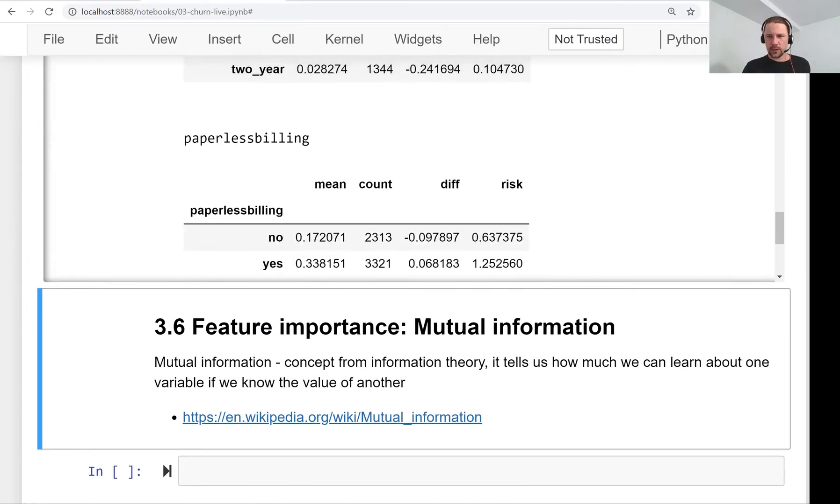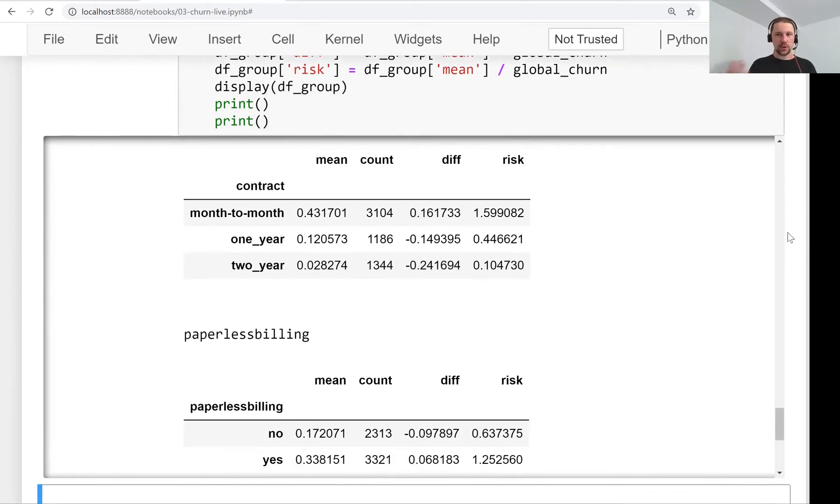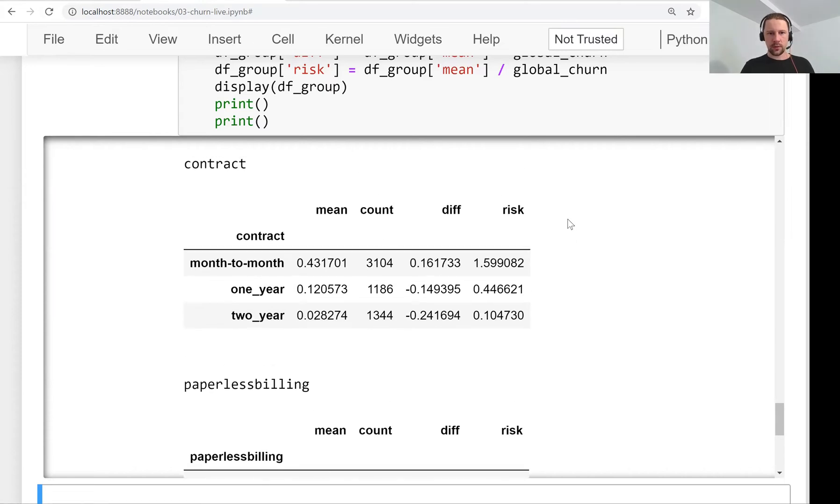In the previous lecture, we looked at risk ratio as a way to measure the importance of different categorical variables, and it applies to each value within a variable. So if we have a variable contract with values like month-to-month, one year, and two years, within each subgroup that this contract variable defines, we can see that people who are on month-to-month contracts are more likely to churn than people who have two-year contracts.